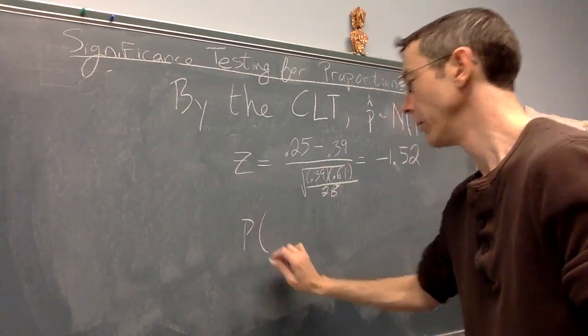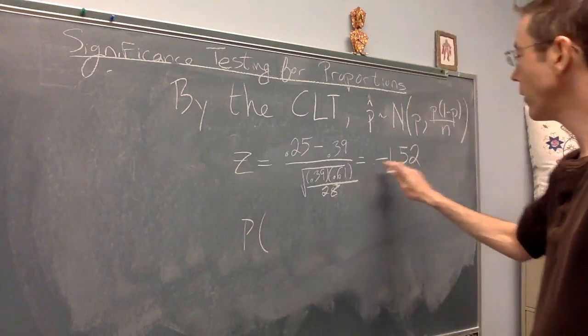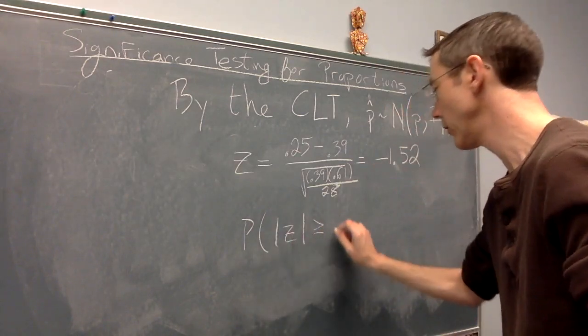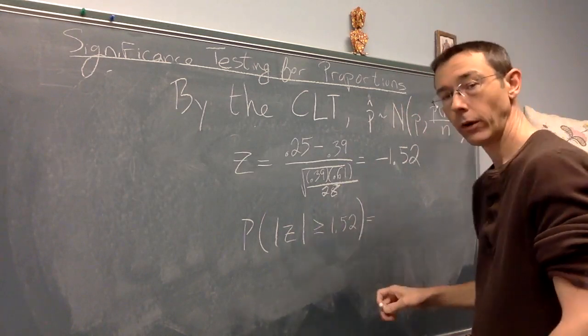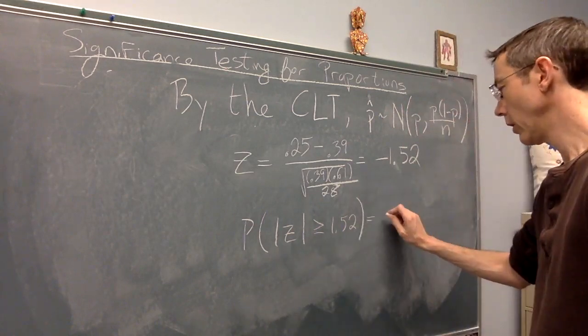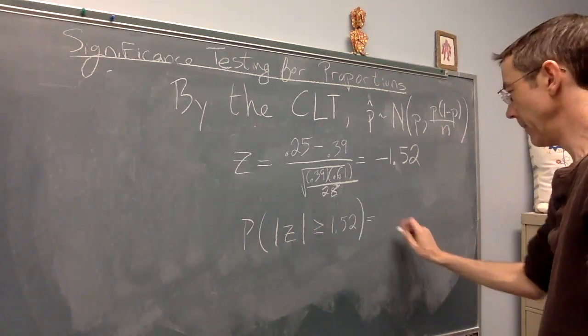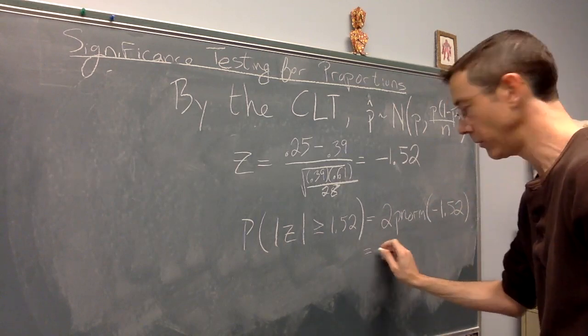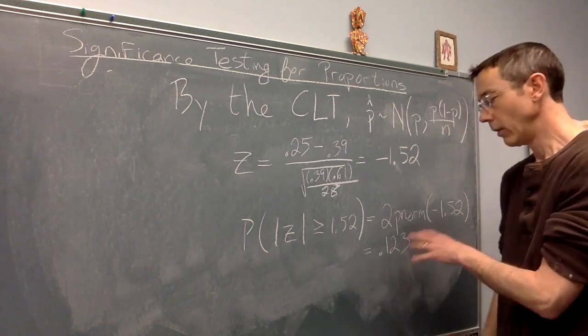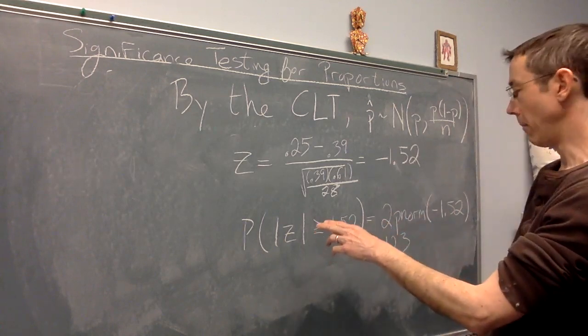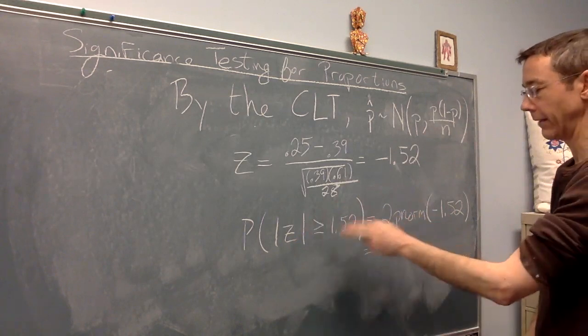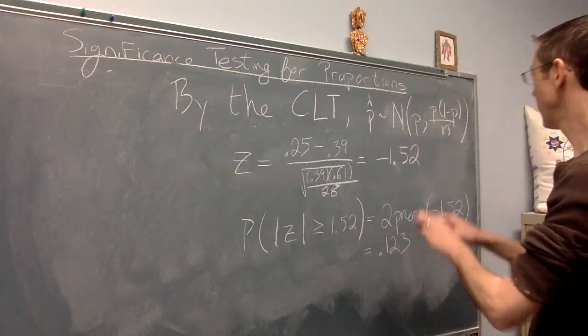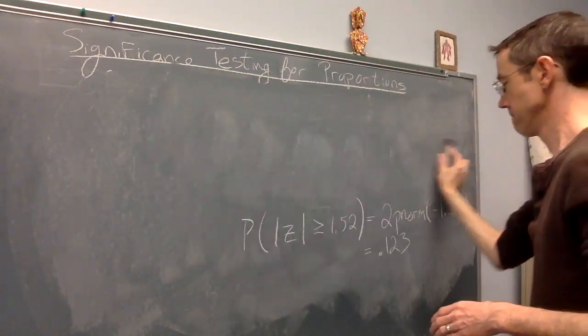Great. So the probability statement we wrote a moment ago can be rewritten as the probability of getting a z-score greater than this absolute value, further away from zero than this. The probability that the absolute value of z is greater than or equal to 1.52. So as always, I encourage you to use technology for this, not a table. In R, the command is going to be a p-norm. It'll be twice the p-norm of negative 1.52, which comes out to be 0.123. Now, this is the p-value. Before I say anything more about that, let's just take a moment longer to discuss how I got this calculated, how I got this answer. And as usual, when I'm talking about a normal distribution, I'm going to draw pictures. I think I'm going to erase a little higher on the board here.